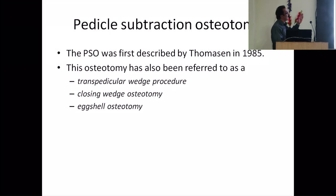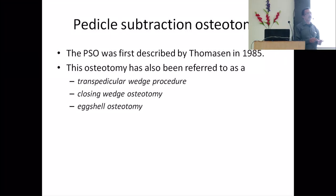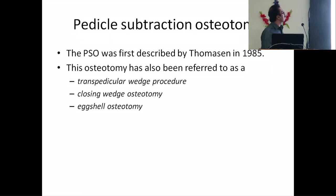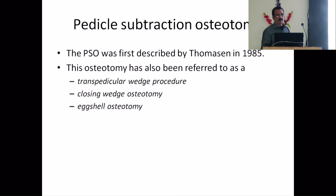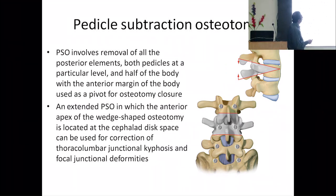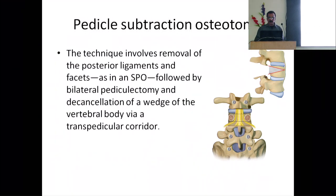The pedicle subtraction osteotomy will give you more correction. In 1985 it was also called transpedicular wedge procedure, closing wedge osteotomy, and axial osteotomy. Basically it involves taking out a triangular-shaped wedge of bone, where the apex of this triangle is at the anterior cortex of the selected vertebra. Posterior elements — inferior part of the lamina, spinous process, inferior facet, superior facet, and the superior part of the inferior lamina and pedicle — are all removed, creating a gap of that size.